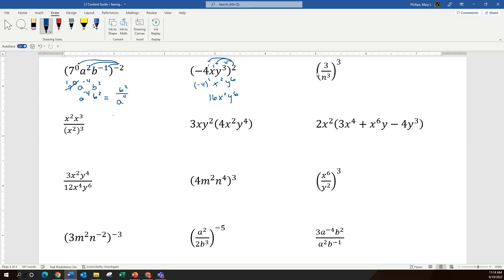For our next one, again, this exponent on the outside applies to every part, every exponent. So it applies to the exponent of 1 on the 3 and to the exponent of 3 in the denominator. So multiplying the exponents on the top, I have 3 to the 3rd. In the denominator, I have n to the 9th. Simplifying the top gives me 27 over n to the 9th.